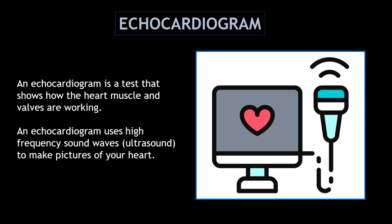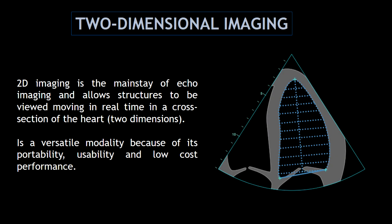What is an echocardiogram? An echocardiogram is a test that shows how the heart muscle and valves are working. This test uses high frequency sound waves to make pictures of your heart. 2D imaging is the mainstay of echo imaging and allows structures to be viewed moving in real time. It's a very versatile modality because it's portable, very easy to use, and at a low cost.